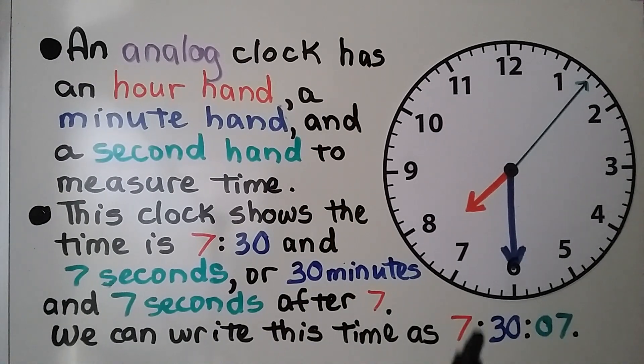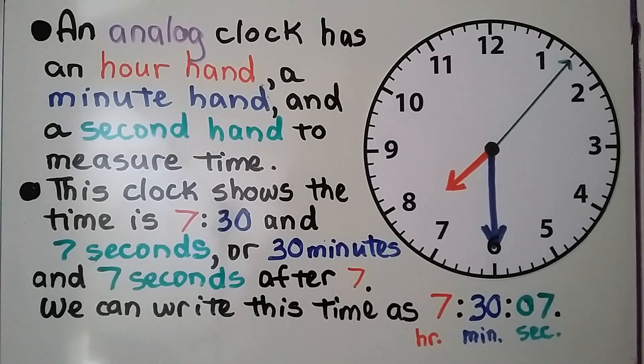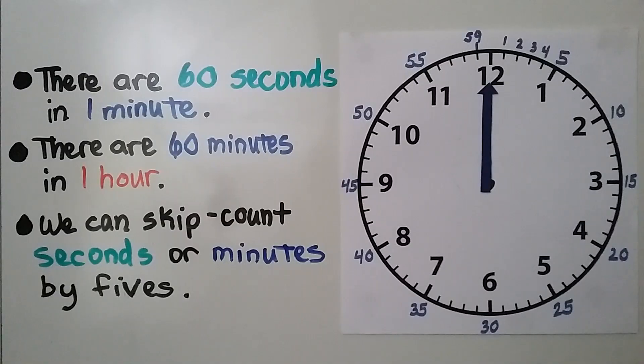See how we use two colons? So this is the hour, this is the minutes, and this is the seconds. There are 60 seconds in one minute. There are 60 minutes in one hour.